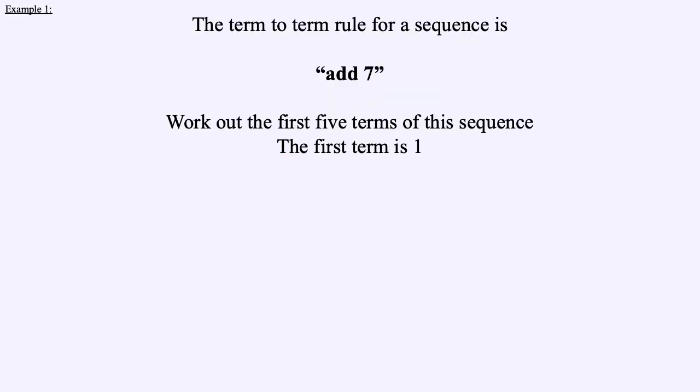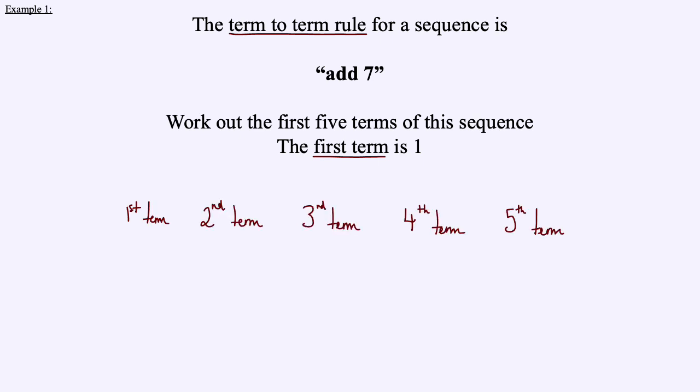The term-to-term rule for a sequence is add 7. Work out the first five terms where the first term is 1. The term-to-term rule means the pattern — what do I do to get from one term to the next? They've told us it's add 7, and the first term is 1. So the second term is 1 plus 7 = 8, the third term is 8 plus 7 = 15, then 15 plus 7 = 22, and the fifth term is 22 plus 7 = 29.